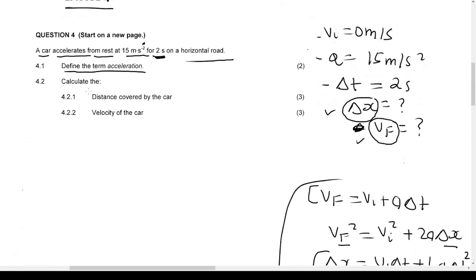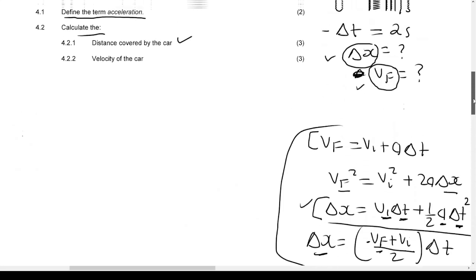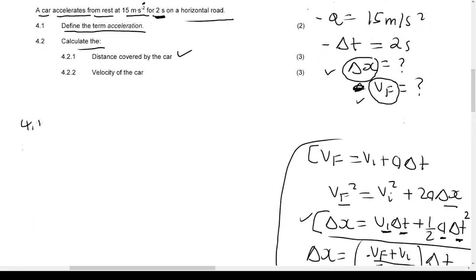Let's calculate the distance that is covered by the car. We need distance, delta x. Do we have initial velocity? Yes, it's zero. Do we have time? Yes, it's 2 seconds. Acceleration? Yes, 15 meters per second squared. So we can use this equation to find distance. This is a perfect equation.